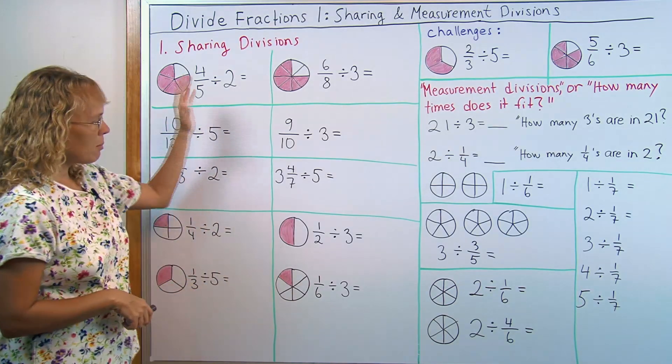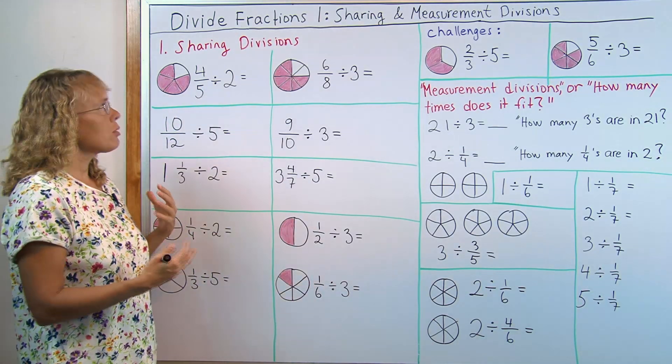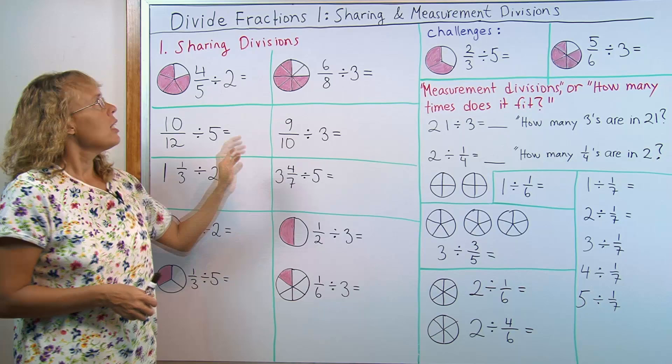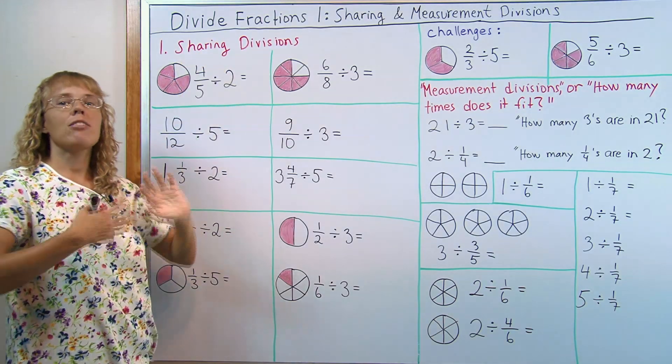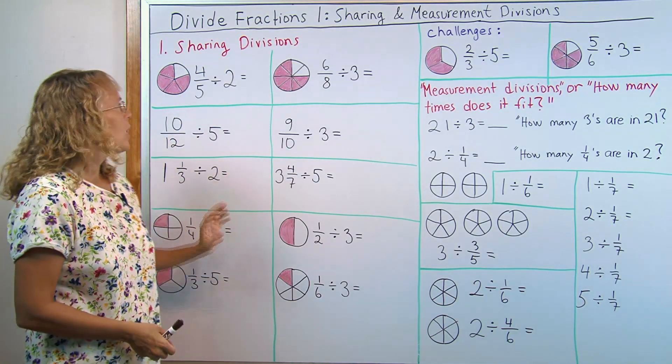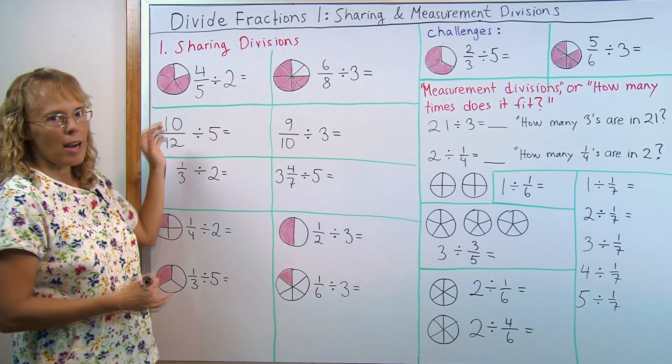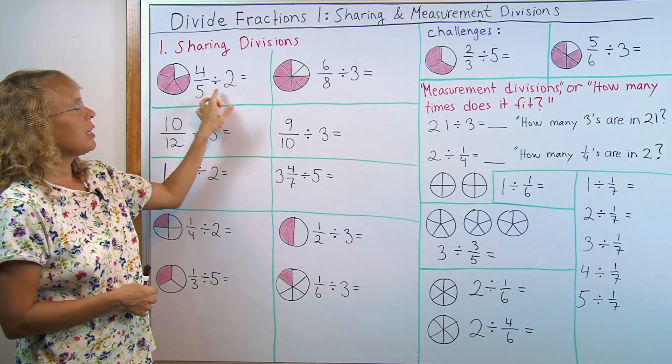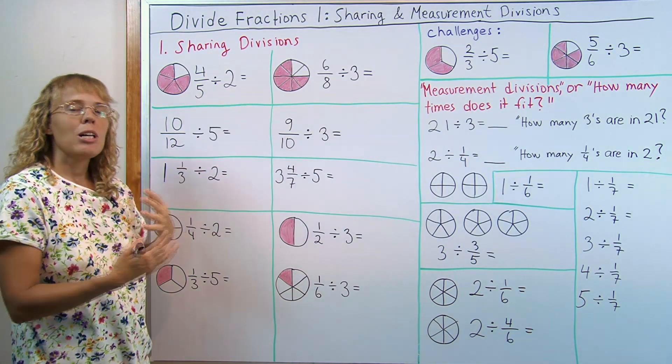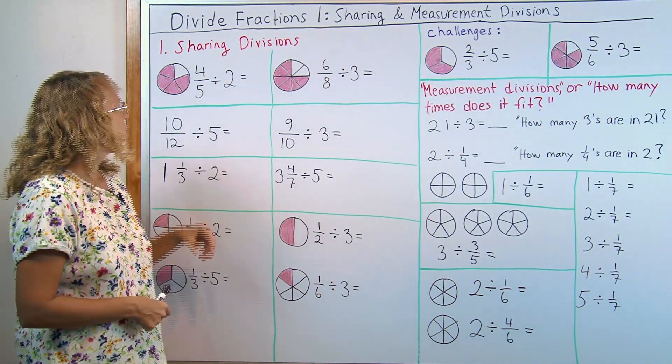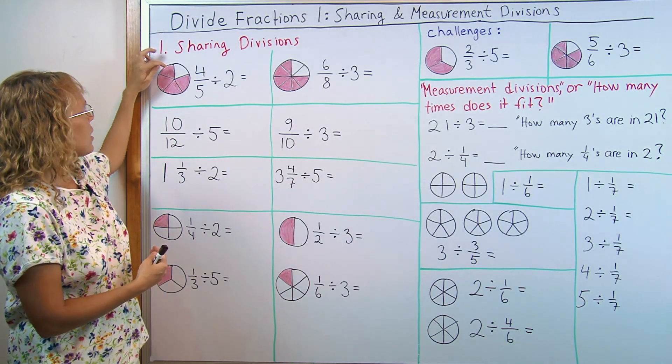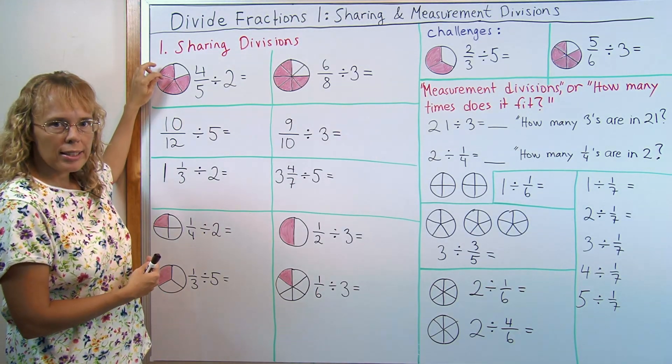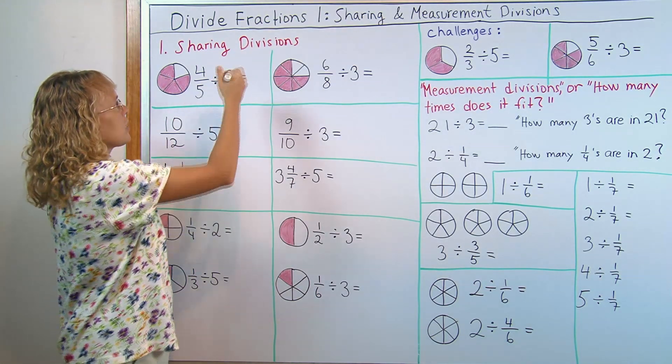Here are some divisions that we can do without using the rule. They're called sharing divisions. That means that you can think about sharing between so many people. For example, there's four-fifths of a pizza left and you're gonna share it between two people. How much does each person get? Each person will get two slices, right? So each person gets two-fifths.